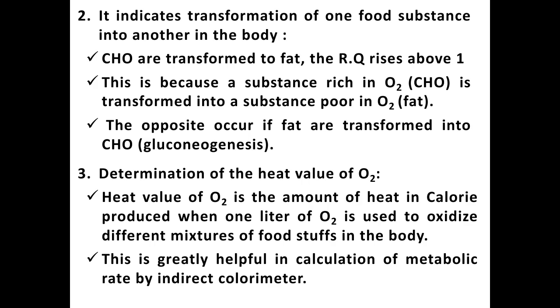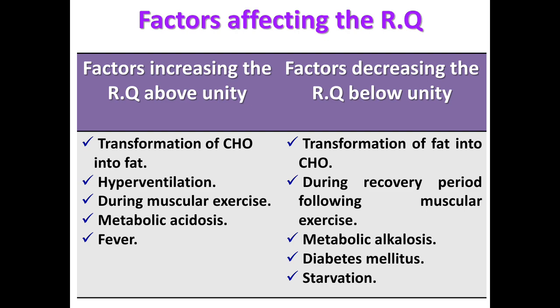This is greatly helpful in calculation of metabolic rate by indirect calorimetry. Factors increasing RQ above unity include: transformation of carbohydrate into fat, hyperventilation due to blowing off excess carbon dioxide, and during muscular exercise where RQ may reach up to 2. Severe exercise, metabolic acidosis, and fever also increase RQ. Factors decreasing RQ below unity include: transformation of fat into carbohydrates, and during recovery following muscular exercise where RQ may be less than 0.5, due to increased oxygen consumption to oxidize accumulated metabolites.